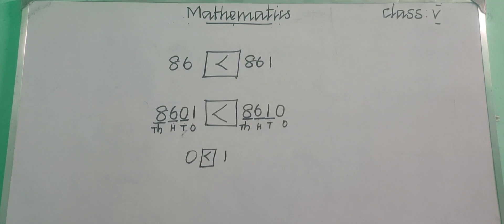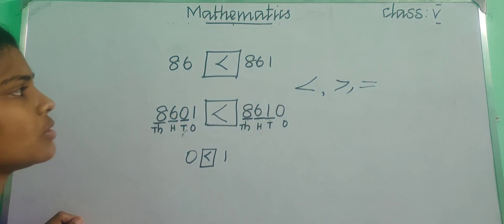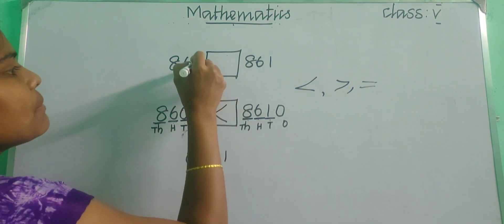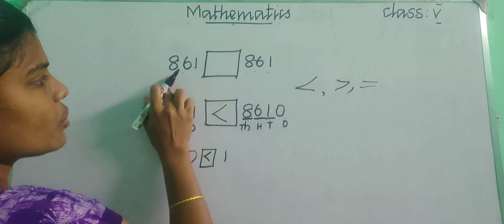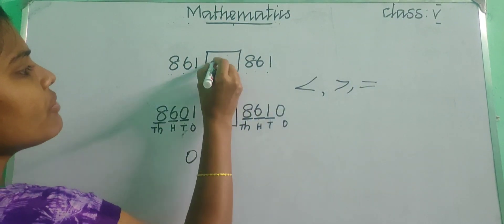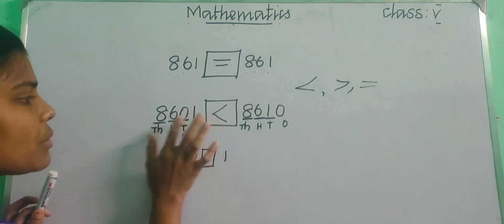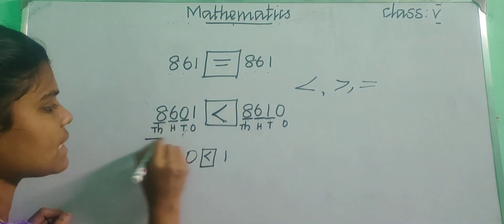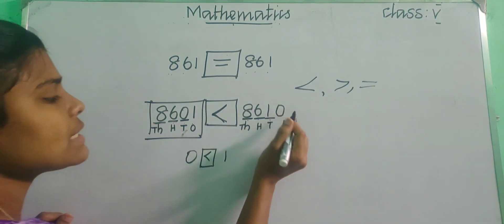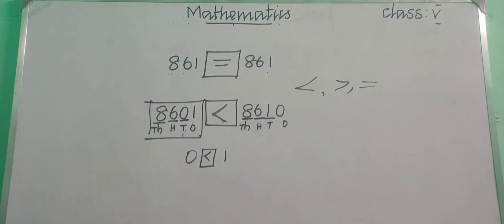So this is called comparison of numbers. We need to use the symbols greater than, less than and equal to. When will you use the symbol equal to? Simply if you are having the same numbers — 861 and 861 — if you have the same number on both sides, we can put equal to. The number which has the pointed place is the smallest number, and the number which has the open mouth facing it is the greatest number.